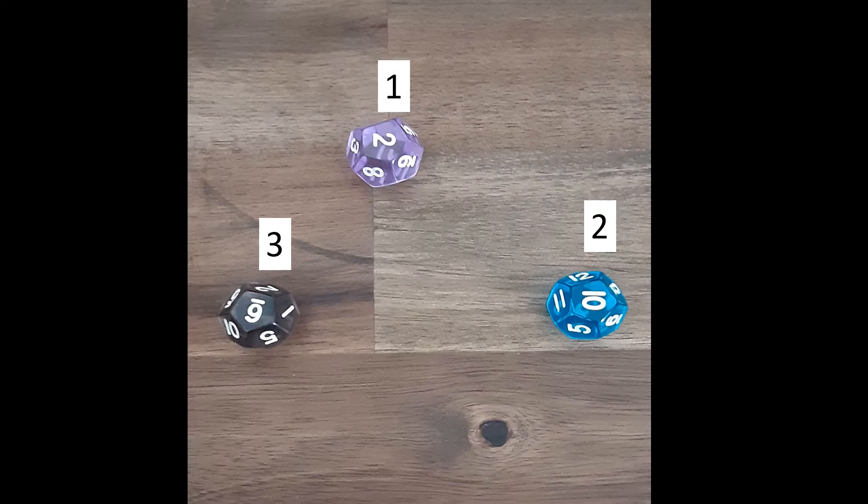If you chose dice number one, it rolled a two, which represents Aphrodite, goddess of affection.